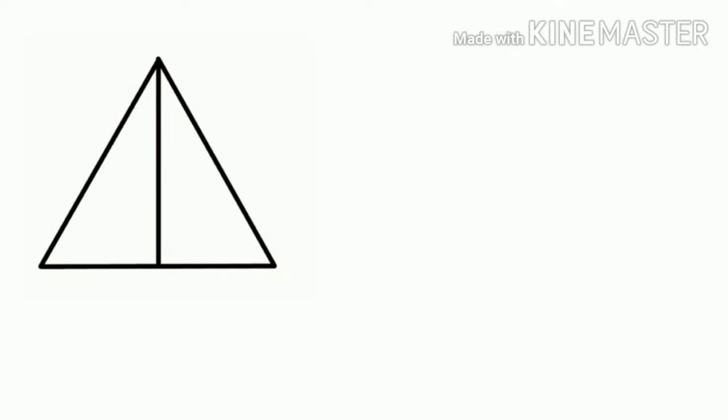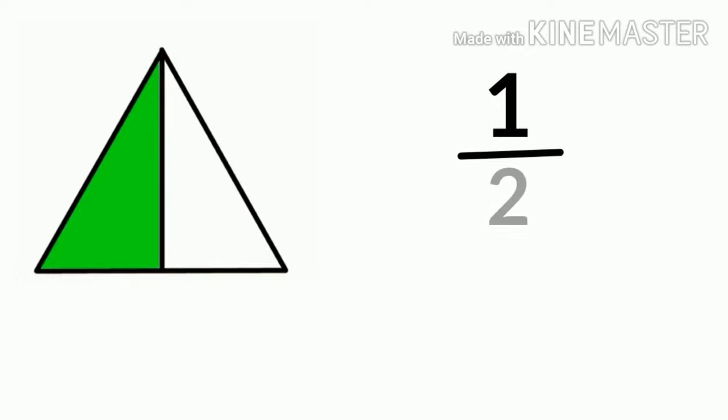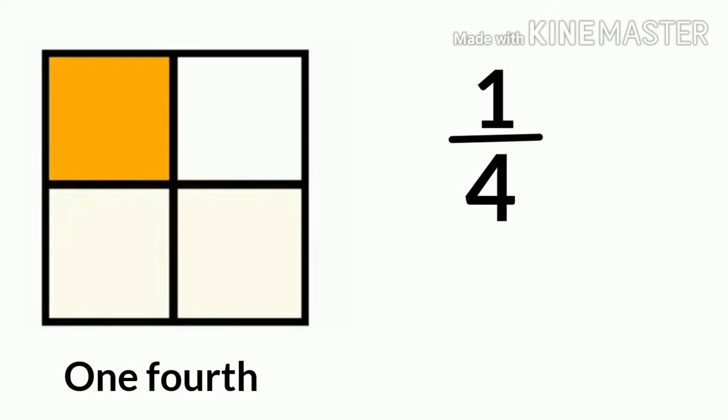When something is divided into two equal parts, we call them halves. One piece out of two total pieces is one half. When something is divided into four equal parts, we call them fourths. One piece out of four total pieces is one fourth.